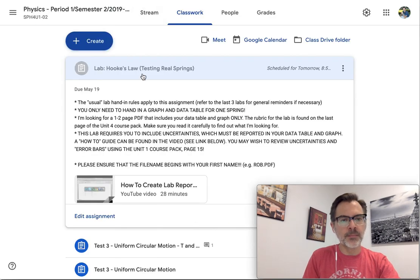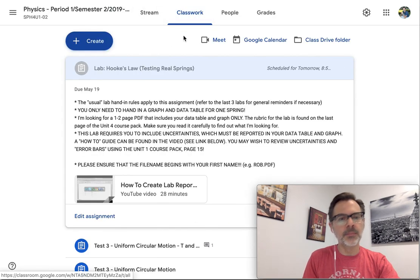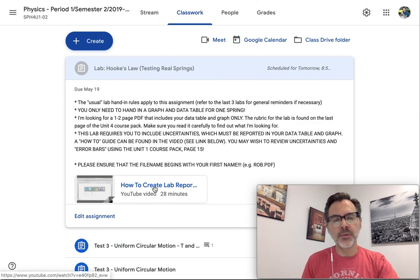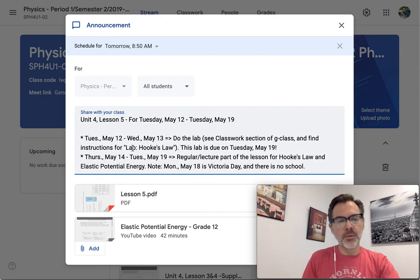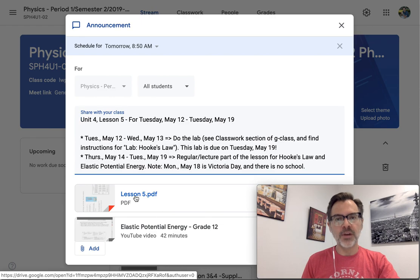Once again, go into the classwork section, click on lab, Hooke's Law. There's the video right there for you. The submission instructions are the same as always. You're going to make it in PDF and attach it. Remember, this is the beginning of the lecture notes for the entire lesson. We're going to get the lab done first. After that, we're going to dive into the theory and learn about elastic potential energy and something called simple harmonic motion.